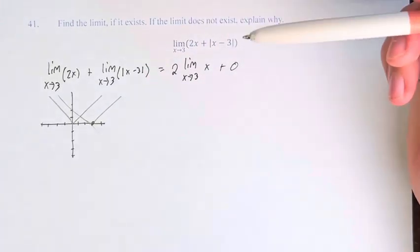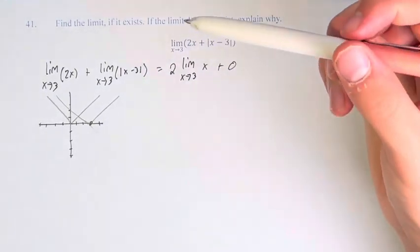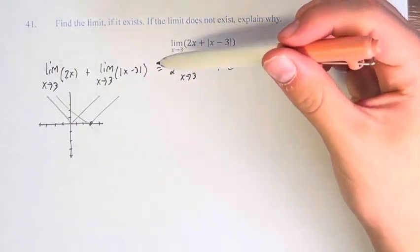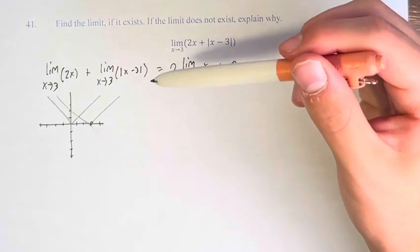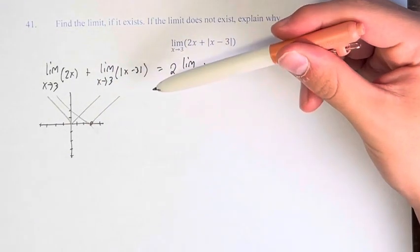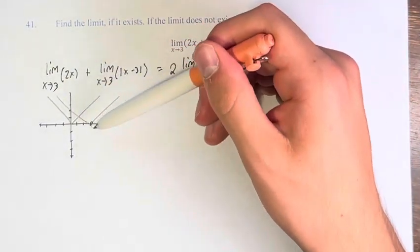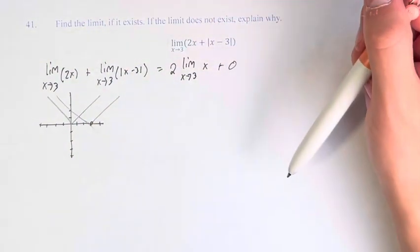We could have also done this by taking the limit from the left and right or by plugging in values close to it. But neither of those are exact. So I just like graphing it. I think that's the easiest way for simple functions just like this.